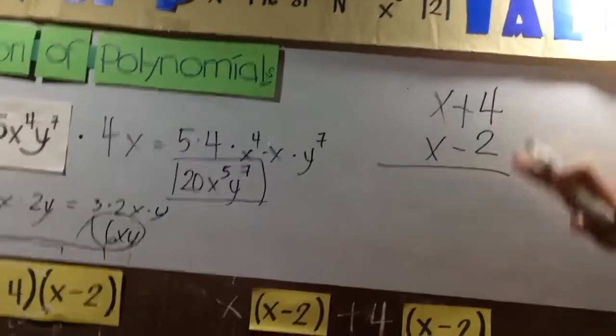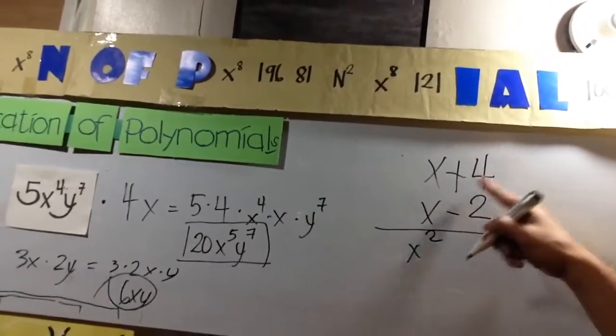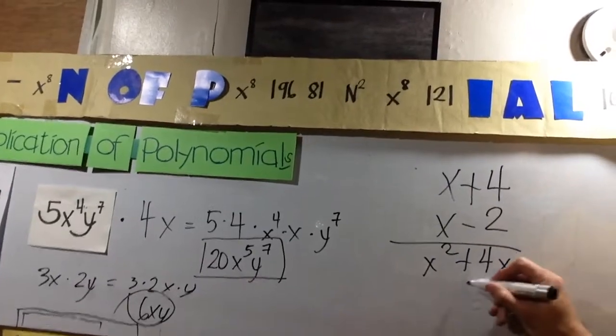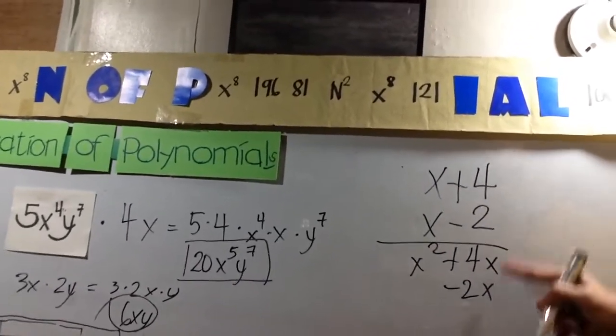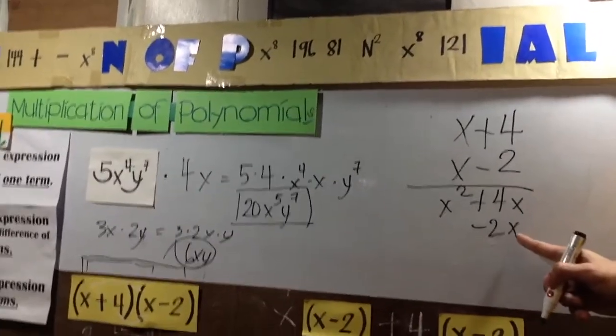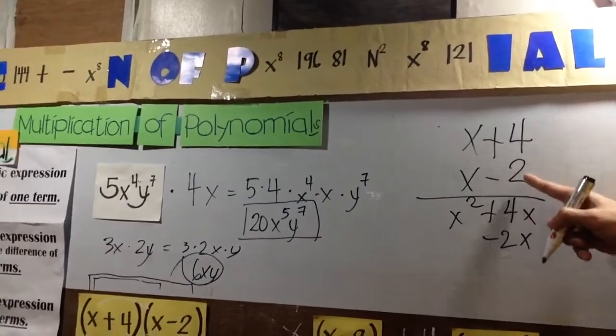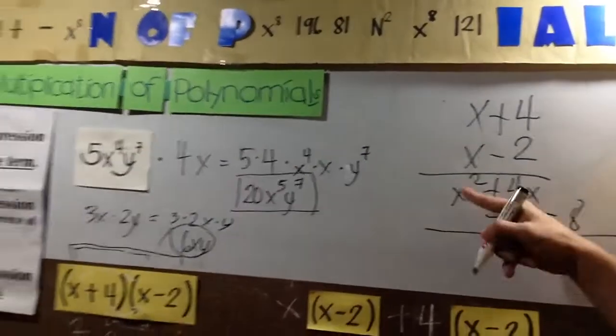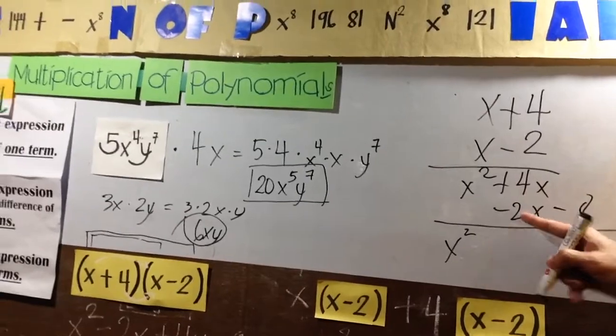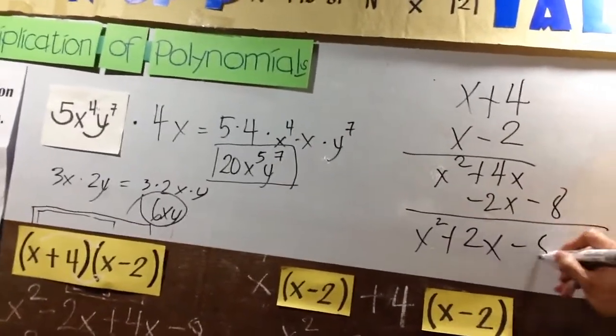So x times x is x squared, x times 4 is plus 4x. Then negative 2 times x - the answer should be negative 2x. It needs to be by column, its exponent by column, its degree. Then negative 2 times 4 will be negative 8. So bring it down.